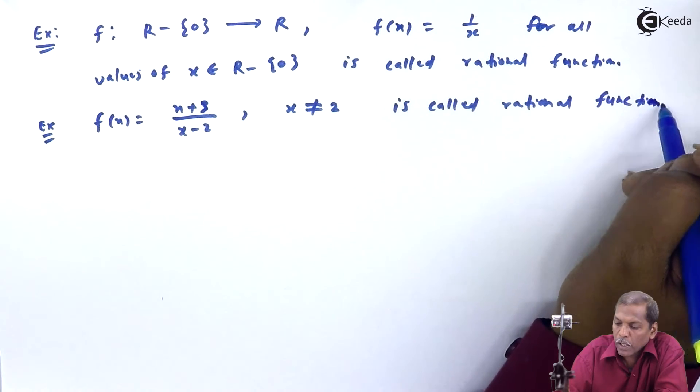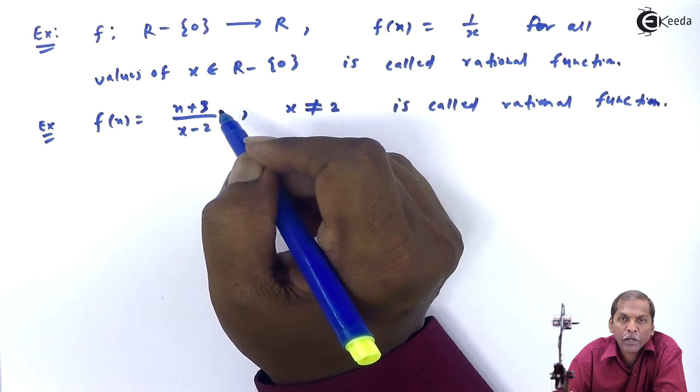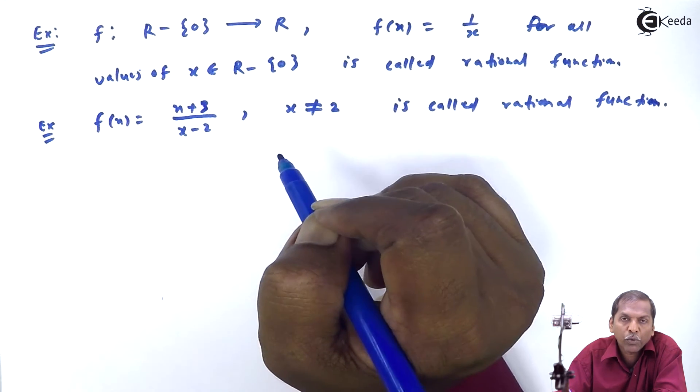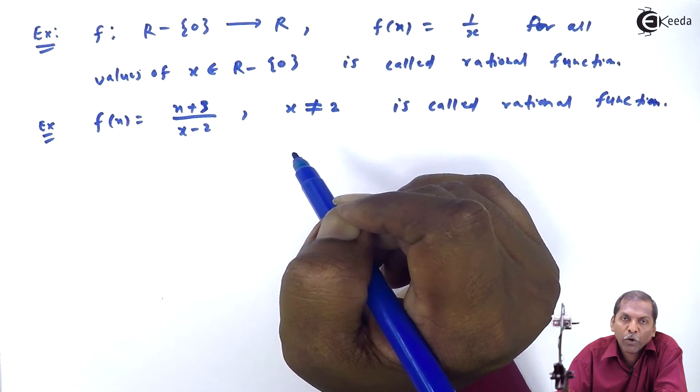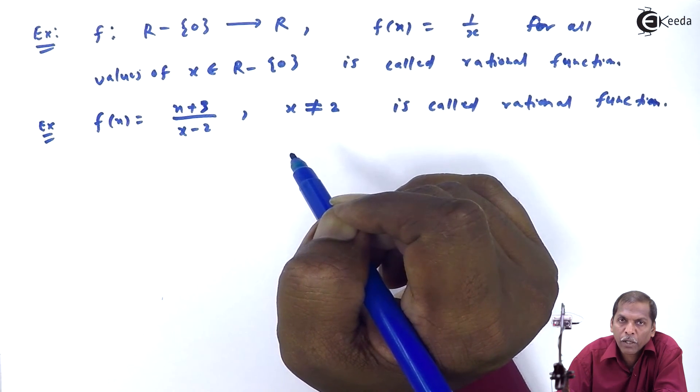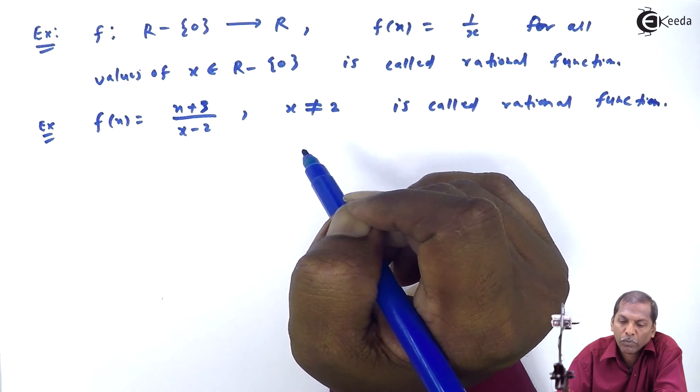In rational function, x plus 3 is called numerator and x minus 2 is denominator. Condition: denominator should not be equal to 0.